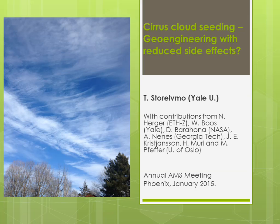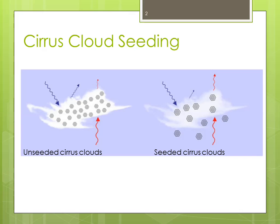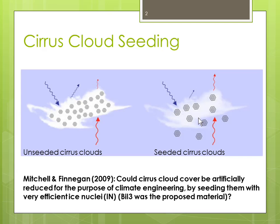How will we achieve this reduction in cirrus cloud greenhouse effect? This schematic illustrates the purpose of the cirrus seeding. We would start with clouds like the one on the left-hand side that have many small ice crystals, and the purpose of the seeding would be to convert the cirrus clouds to clouds that consist of few but large ice crystals that would sediment out and thereby reduce cirrus cloud coverage and lifetime.